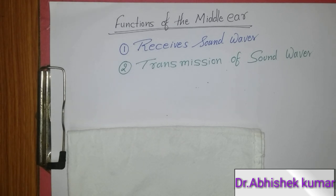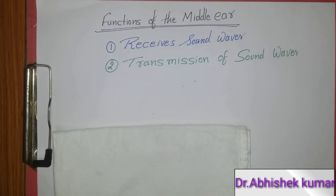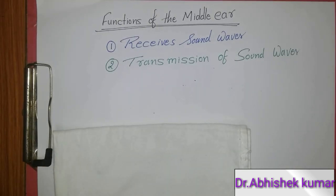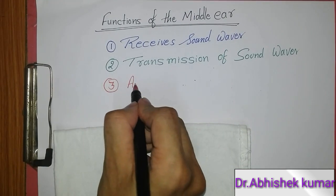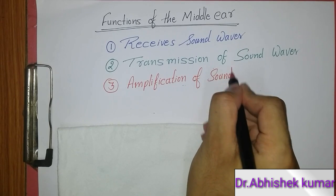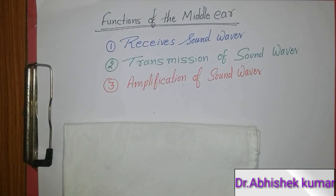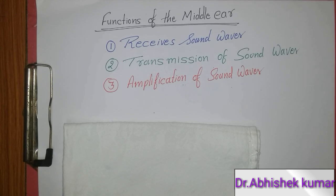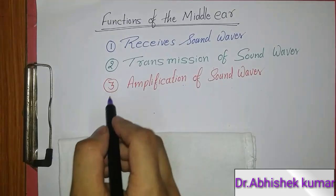The third function of the middle ear is amplification of sound waves. The force of sound wave that strikes the tympanic membrane increases several times as it reaches the foot plate of the stapes and the oval window. One reason is that the surface area of the tympanic membrane is 50 square millimeters, which is larger than that of the oval window, which is about 3 square millimeters. The ratio is about 17 to 1, so the total force of the sound wave exerted on the tympanic membrane is transmitted to the oval window, increasing the pressure about 17 times.